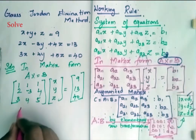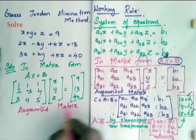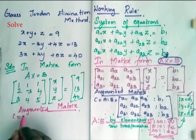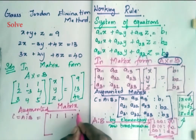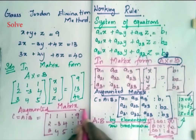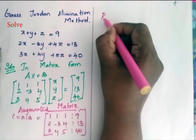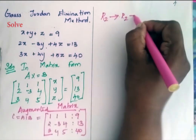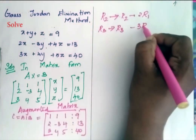After this, I have to represent this matrix in augmented form. So the augmented matrix C = [A|b] is [1, 1, 1 | 9; 2, -3, 4 | 13; 3, 4, 5 | 40]. Now I have to reduce this augmented matrix. The first transformation I am going to make is: R2 = R2 - 2·R1 and R3 = R3 - 3·R1, so that I will get zeros in the first column.